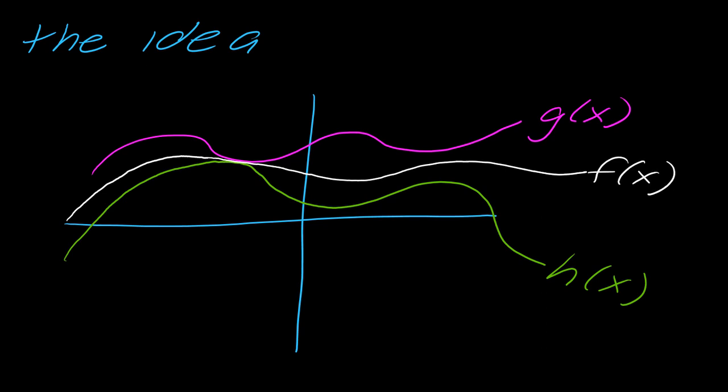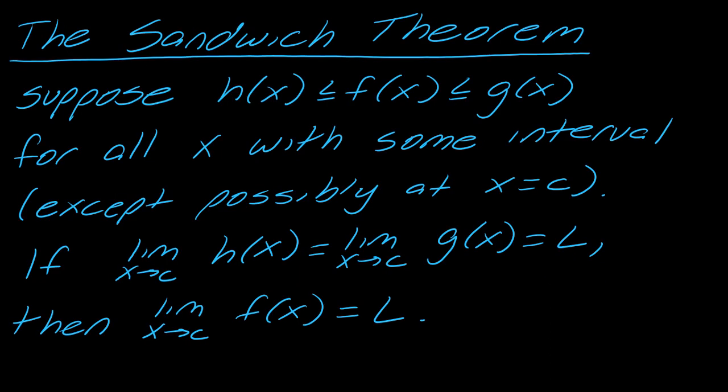So squeeze theorem, you've got a function that is squeezed between two other functions. And so let's pretend also that this point right here is the point c. So if you're trying to figure out what is the limit of f of x, well if you know what g of x and h of x are and you know the limit of those two, then f of x is going to be the same thing. So let me actually just show you the theorem now, I think this will make more sense.